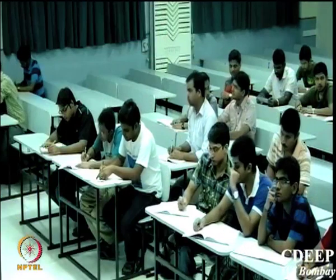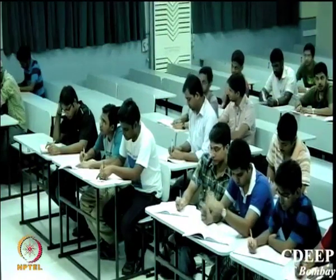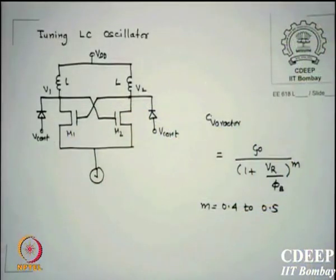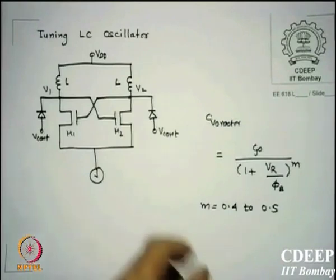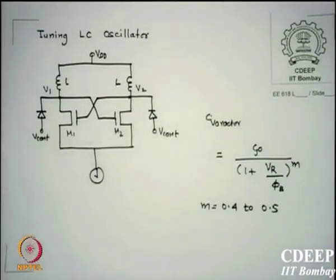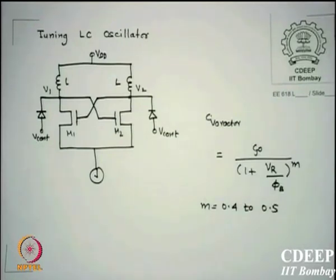We were looking for oscillators. An important oscillator used in most circuits — both analog and digital — is a VCO, which is a tuning LC oscillator. Here, the capacitor is essentially created out of a diode called a varactor, because it is a variable capacitor with voltage, also called variable reactance or varicap.